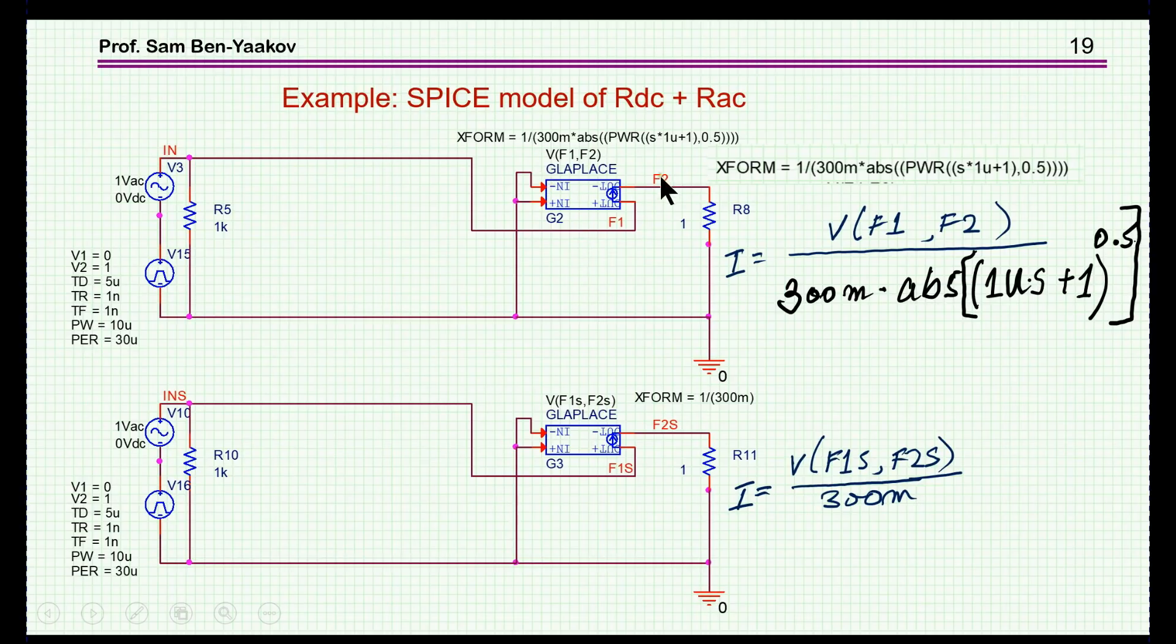With all I've said before, we can just go ahead and do it by generating here a G Laplace element. The input is the voltage across it. Notice that I've shorted out these two connected to ground, and the input is V of F1 F2, this voltage here. The Laplace expression is this expression which I've written here. So the current is the voltage divided by 300 milliohm times the absolute value of 1 plus S times 1 microsecond to the power of 0.5. I've omitted here a 2 pi which I should have put in because the breakpoint was actually 1 megahertz, but let's forget about this.